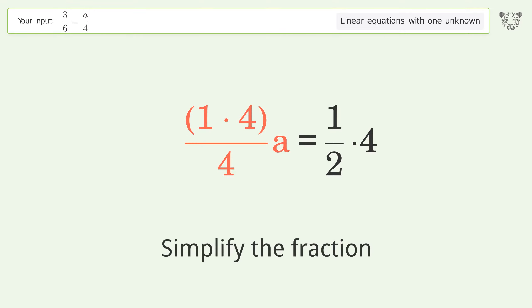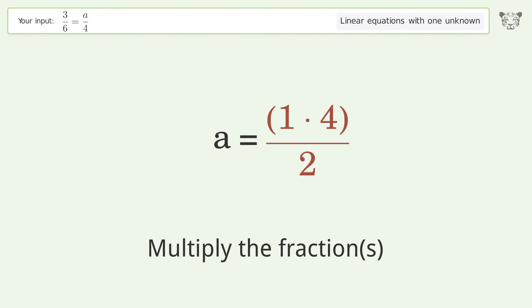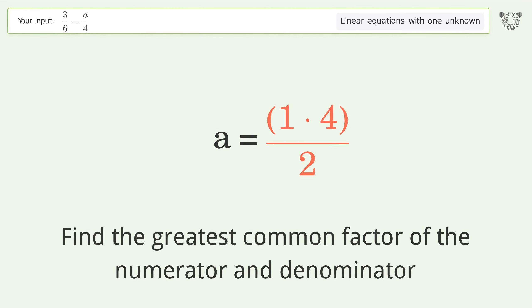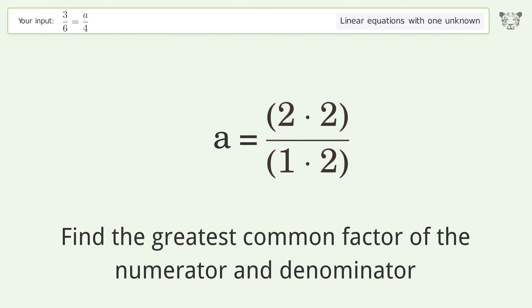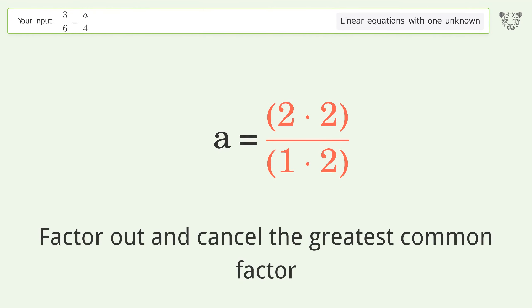Simplify the fraction. Multiply the fractions. Find the greatest common factor of the numerator and denominator. Factor out and cancel the greatest common factor.